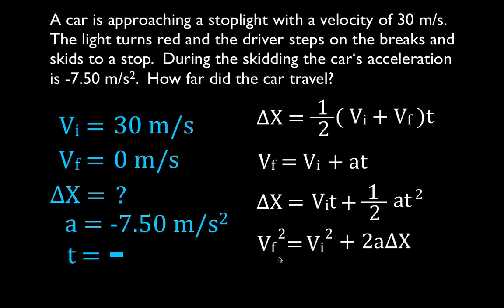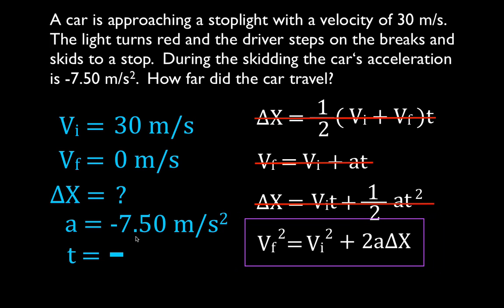We'll get out our kinematic equations and find one that has delta x and the other three known variables. The first equation has delta x but also has time — we don't know the time, so we can't use it. The second equation doesn't have delta x. The third has delta x but requires time — we don't know it. The fourth equation has delta x, and we know the final velocity is 0, the initial velocity is 30, and the acceleration is minus 7.5. Therefore, this is the equation we'll use.